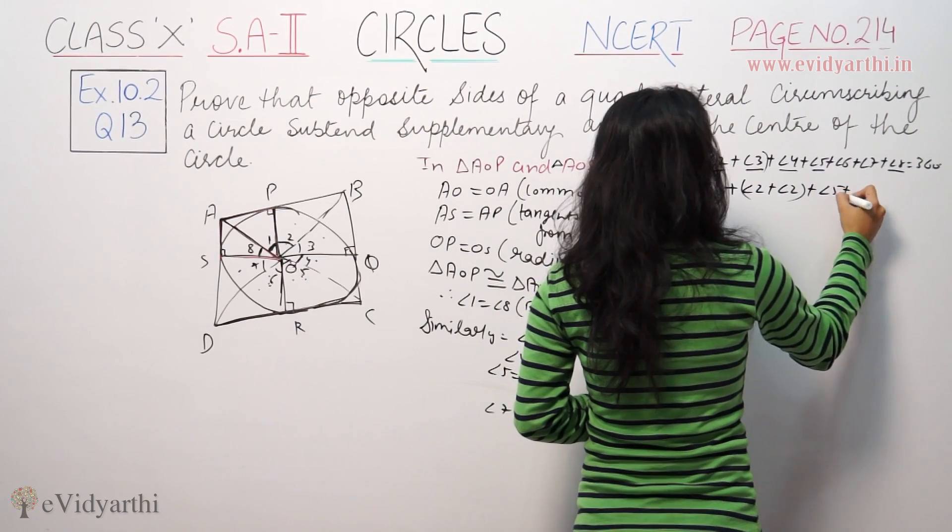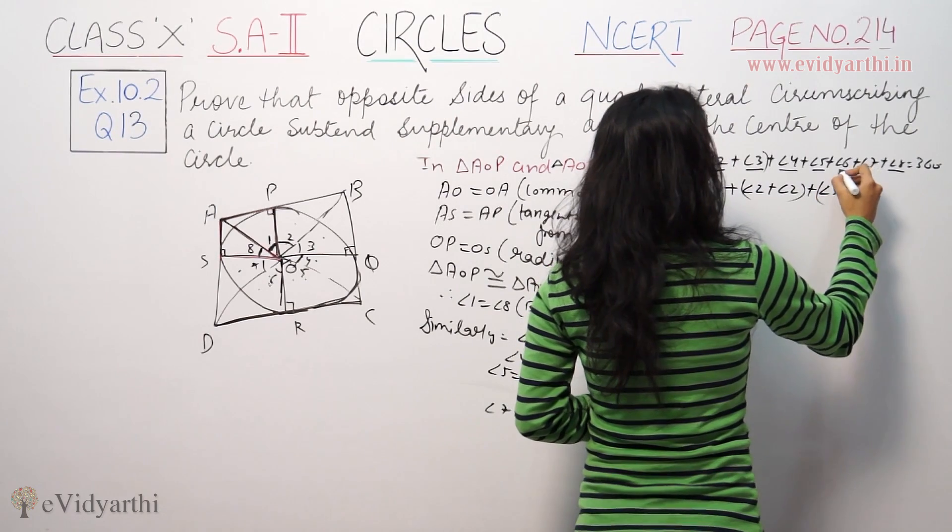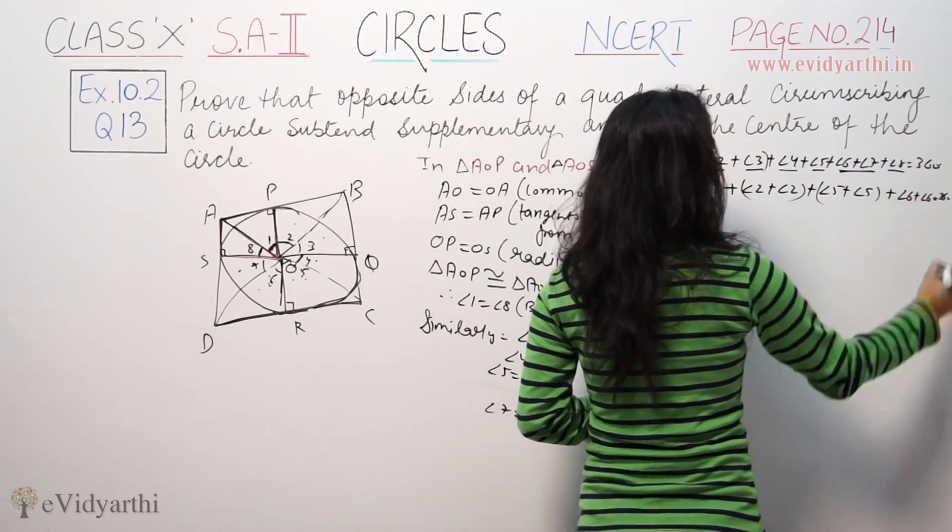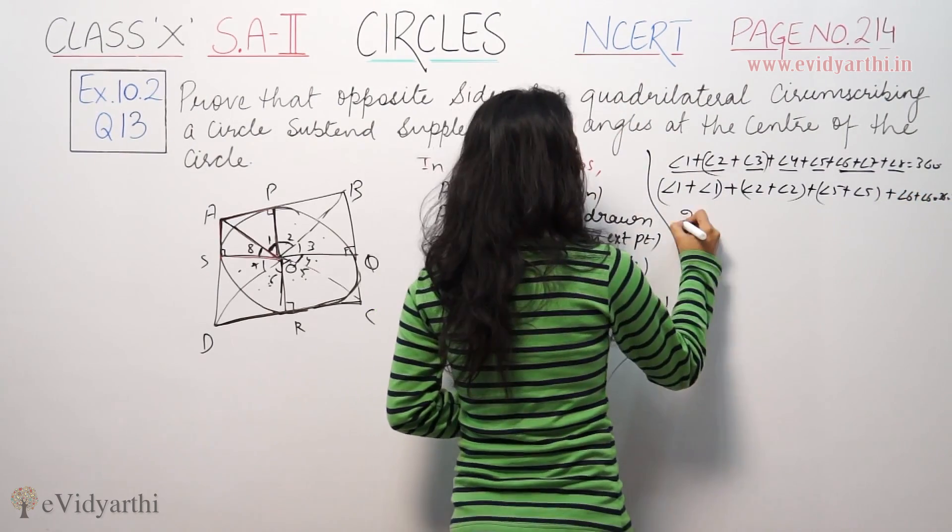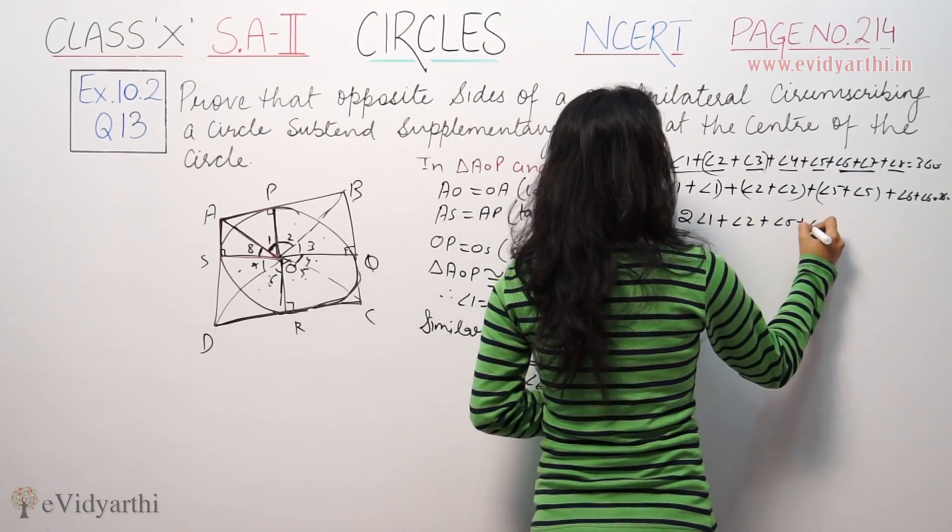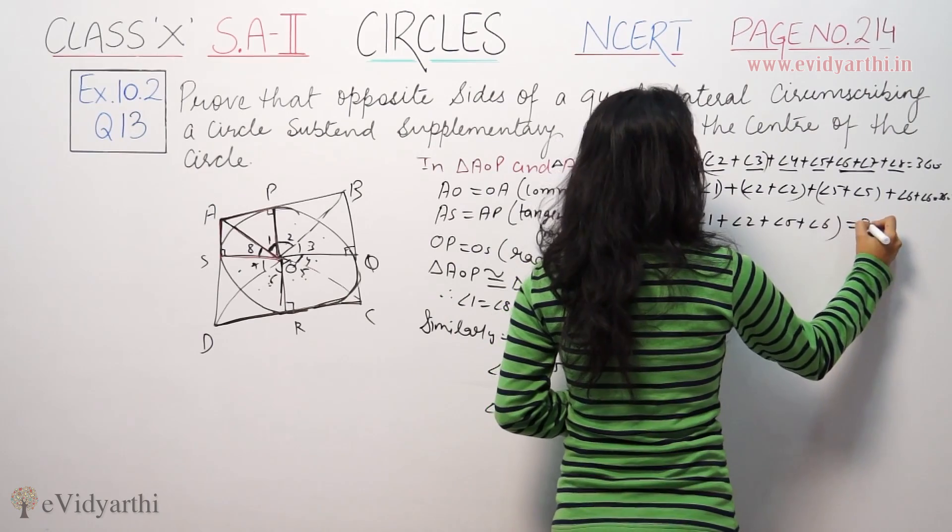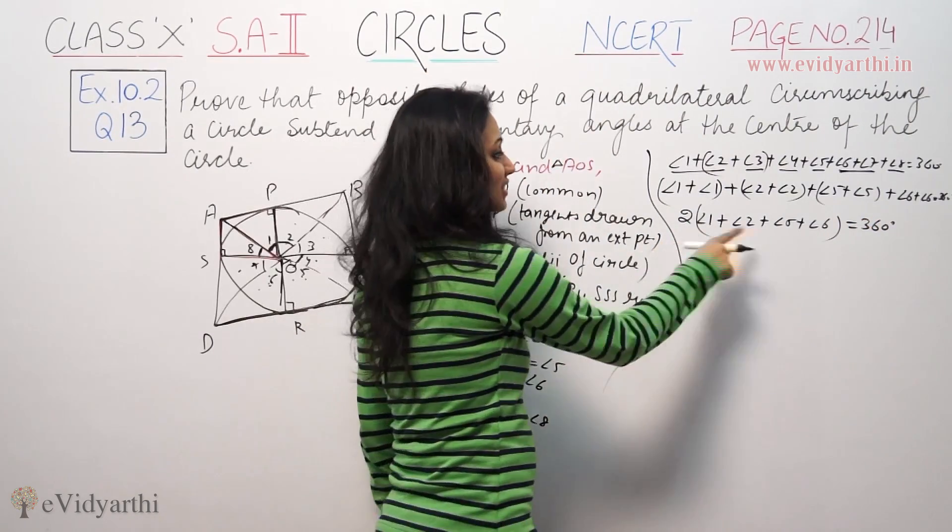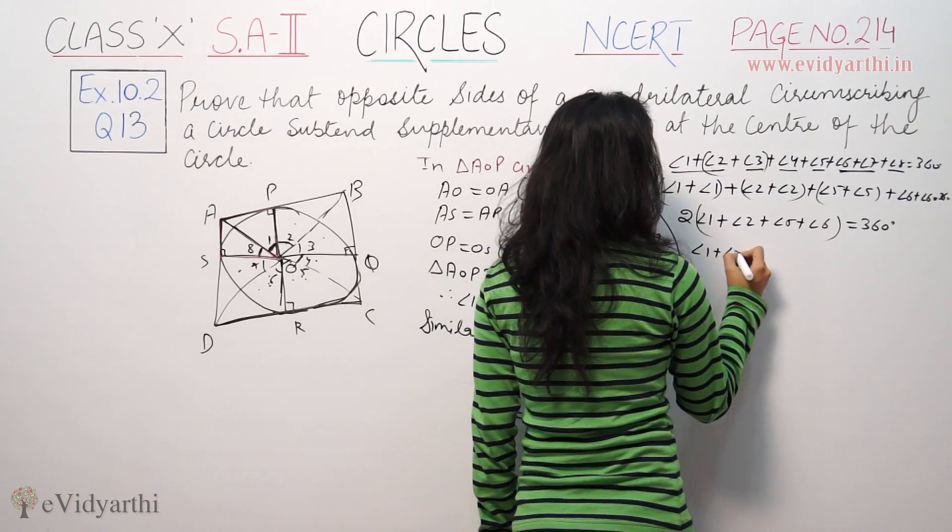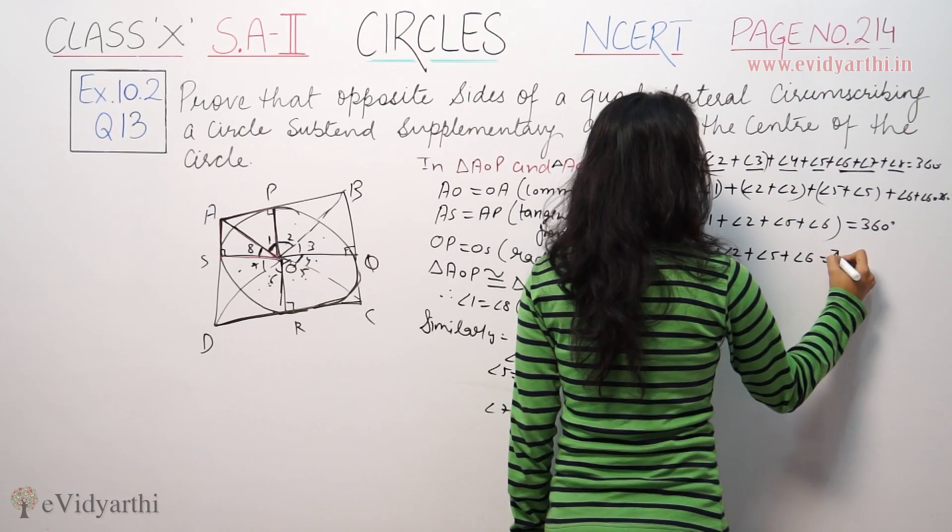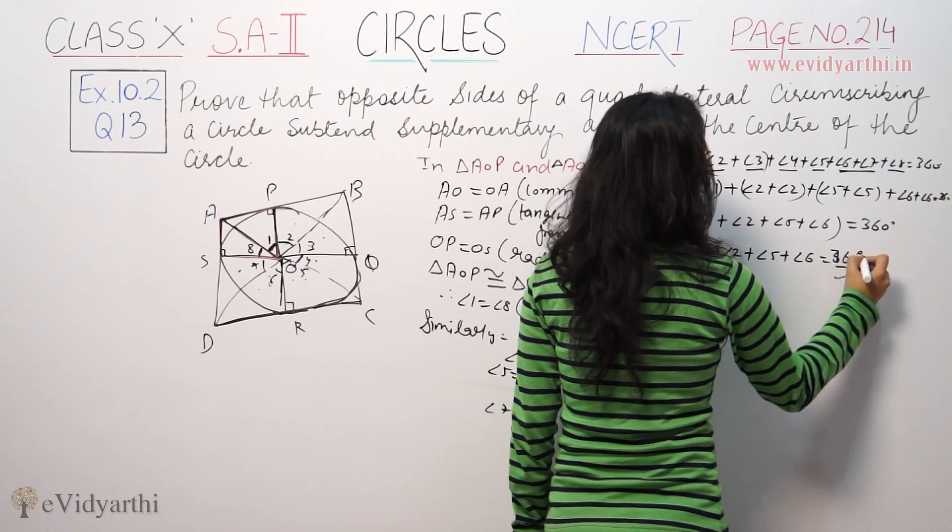Angle 4 equals angle 5, so we write angle 5 plus angle 5. And angle 6 equals angle 7, so we write angle 6 plus angle 6. All of them equal 360 degrees. So twice of angle 1 plus angle 2 plus angle 5 plus angle 6 equals 360.